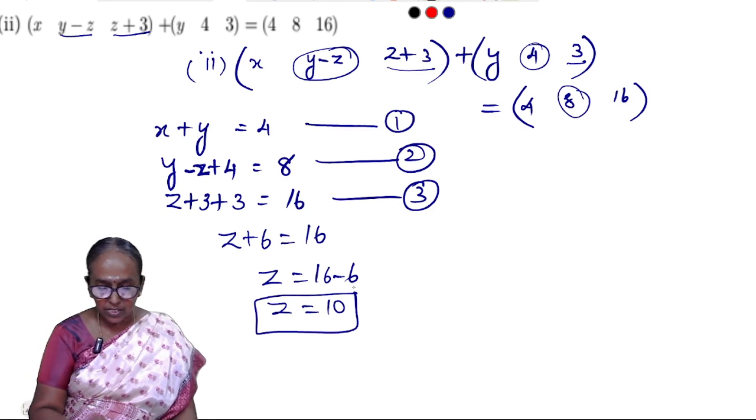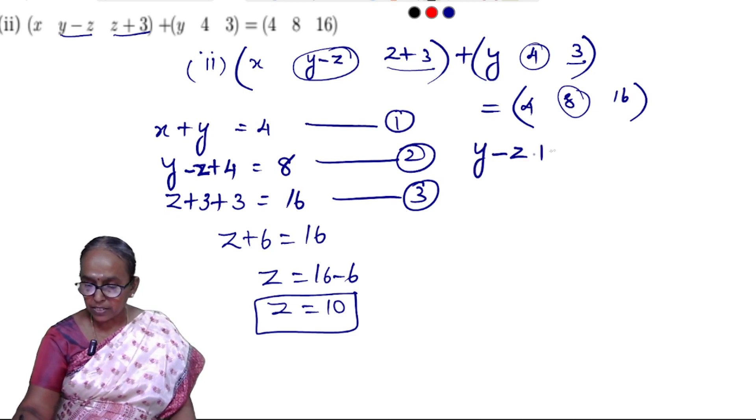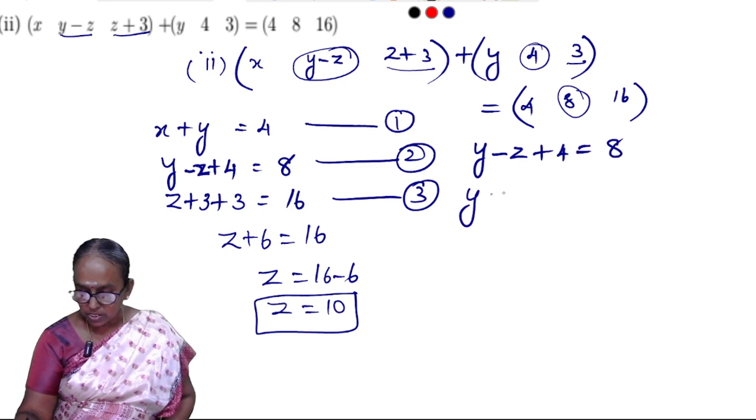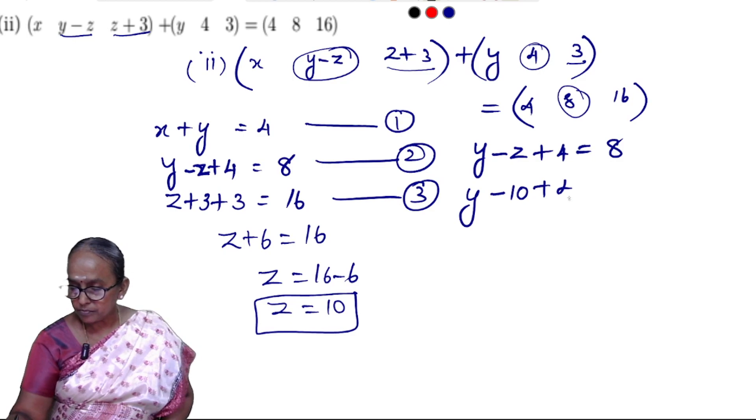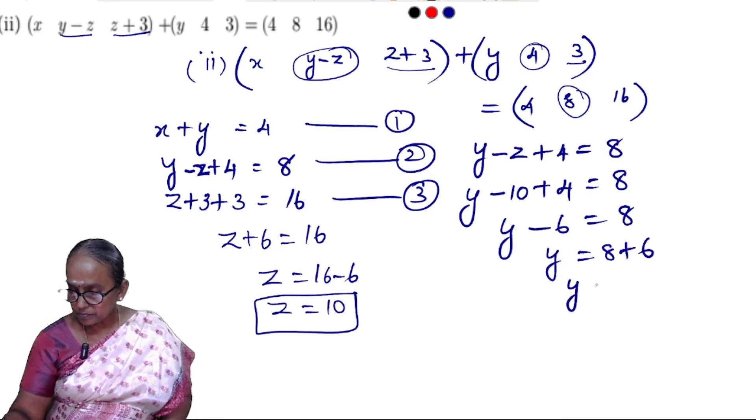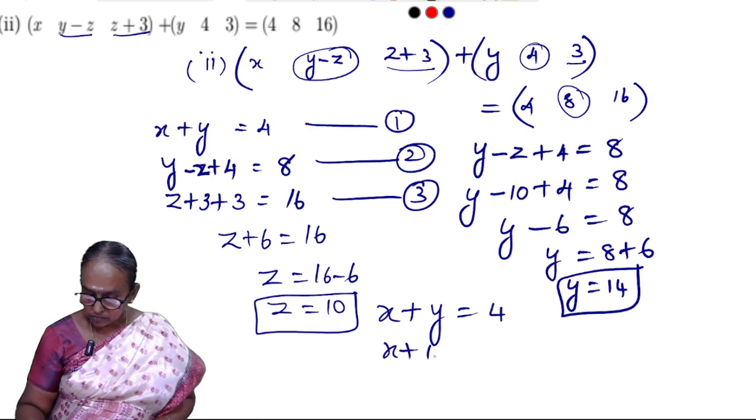Z value is equal to 8. Y minus Z is equal to 8. Y goes 10, Z is equal to 10. Y minus Z plus 4 is equal to 8. Y is equal to 10, Z is equal to 10.